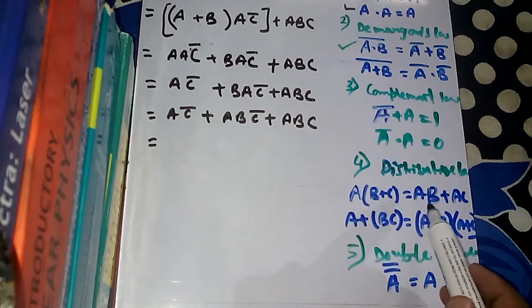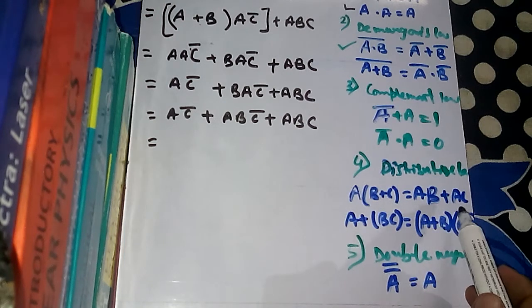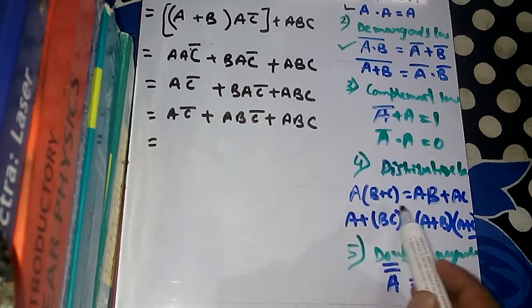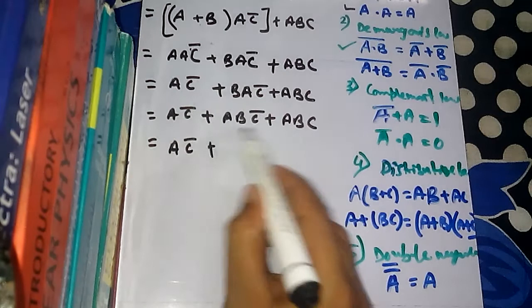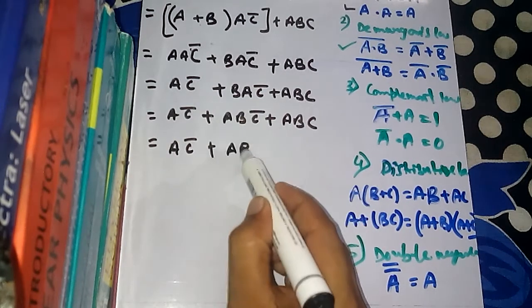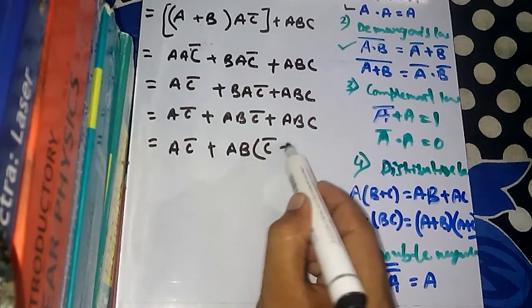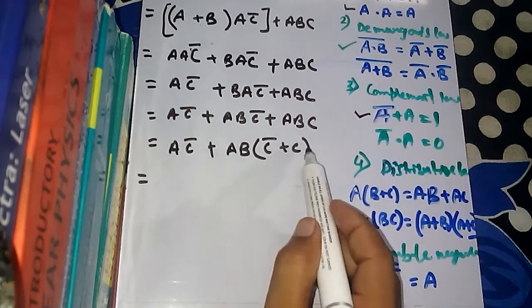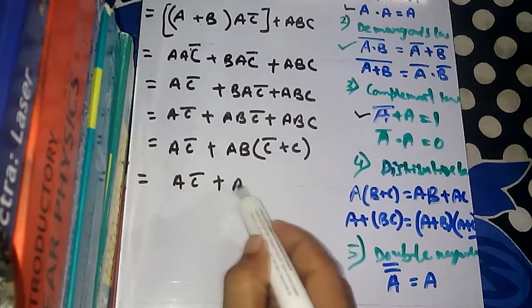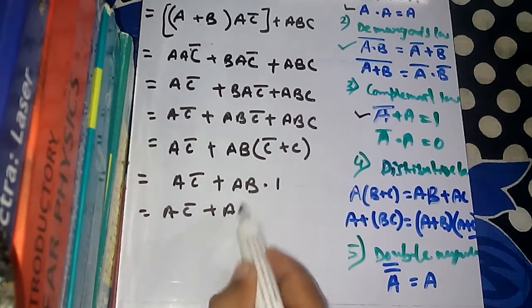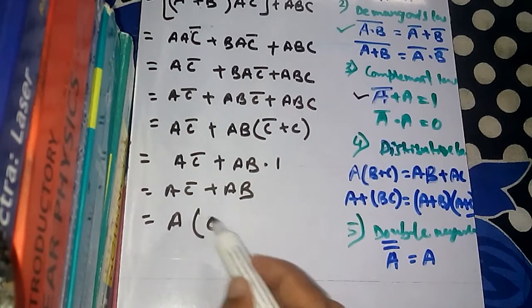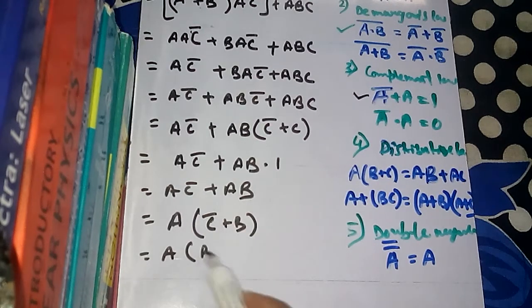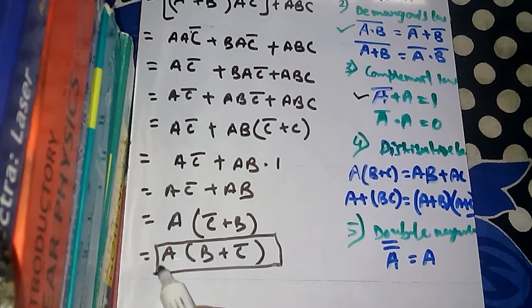Now referring to the Distributive law in reverse: from A·B·C-bar + A·B·C, we can factor out A·B to get A·B·(C-bar + C). By the Complement law, C-bar + C = 1, so this becomes A·C-bar + A·B·1 = A·C-bar + A·B. Factoring again: A·(B + C-bar). This is the simplified Boolean expression for the given circuit.